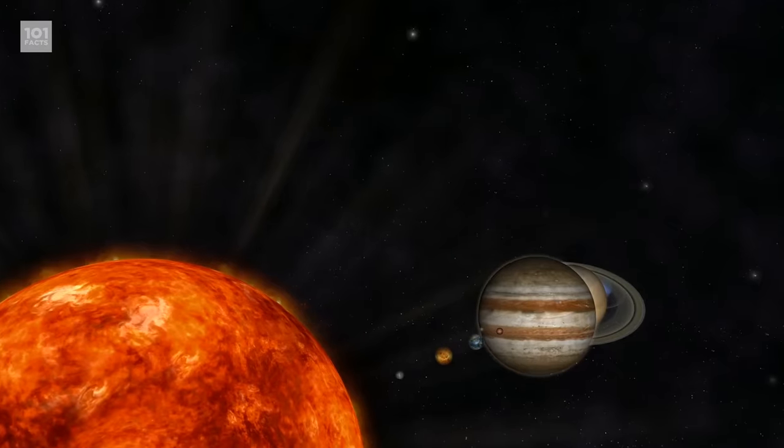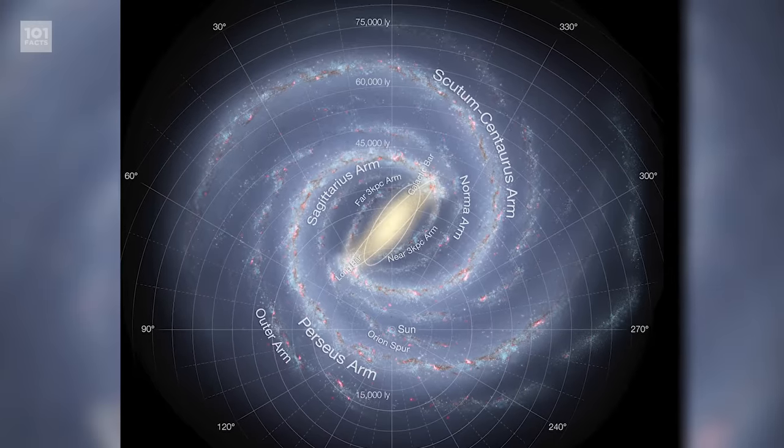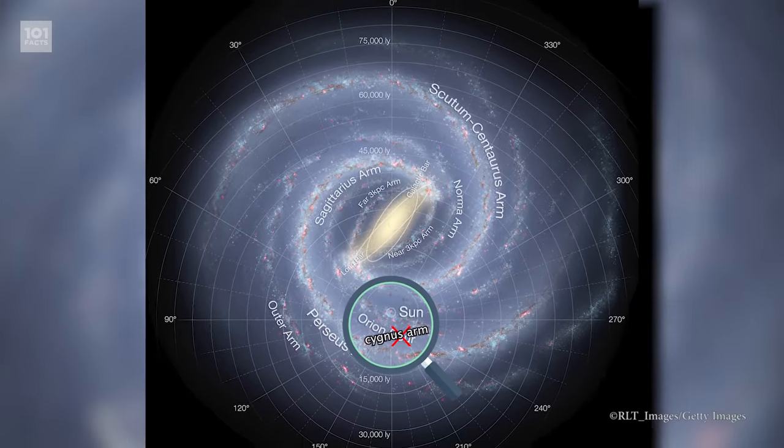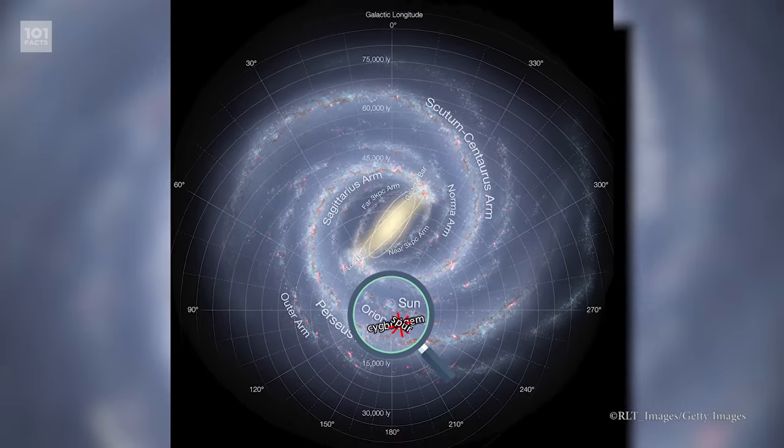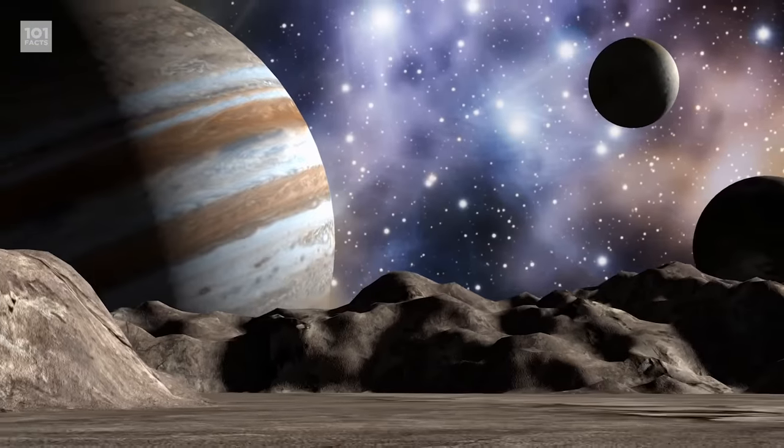The solar system is located in an outer spiral arm of our galaxy, the Milky Way. This arm is called the Orion Cygnus Arm, or Orion Bridge, or Orion Spur. It's approximately 3,500 light-years across, 1,500 of which is taken up by our solar system.